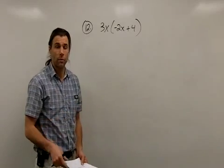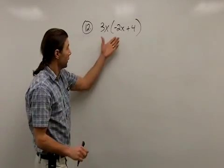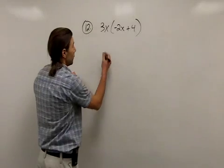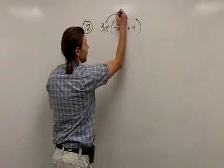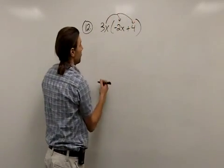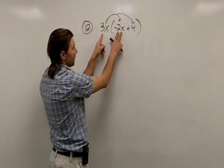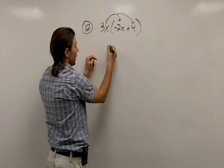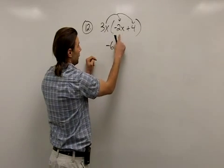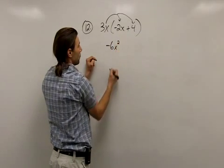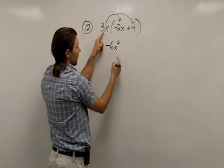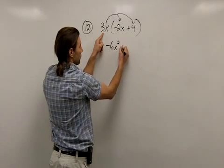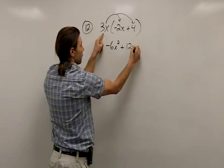Next problem we'll take a look at is problem number 12. And here I'm asked to use the distributive property. So I'm just going to go through and distribute the 3x. A positive 3x times a -2x will give me a -6. And when I multiply the x's together, it will give me an x². 3x times a positive 4 will give me a positive 12x.